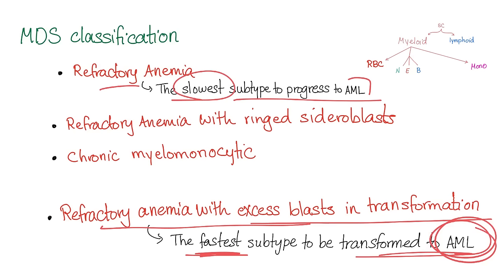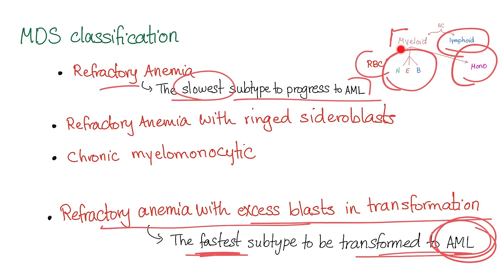Myeloid cells — RBCs, white blood cells, monocytes — and here the lymphoid. MDS only affects the myeloid.